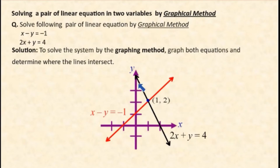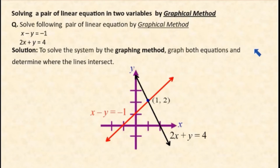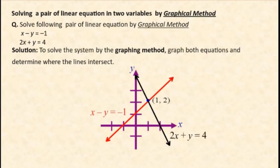Two lines are drawn. The point where they intersect becomes the solution point. That is how we solve a pair of linear equations graphically: draw both equations as lines, and wherever they cut each other is the solution.